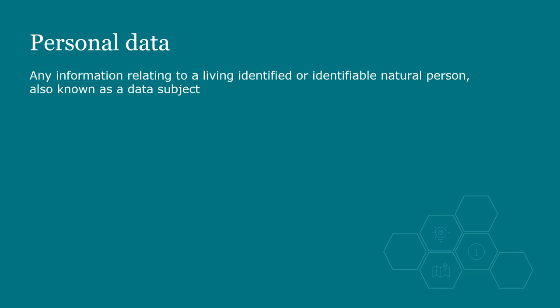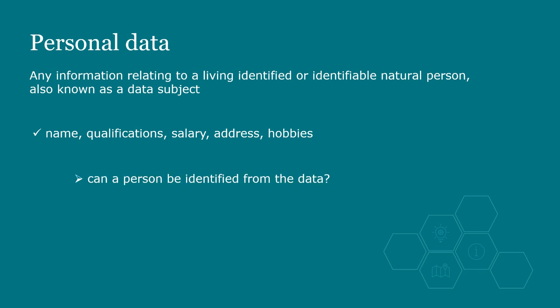Let's start with the data subject and consider their personal data. Personal data is any information relating to an identified or identifiable living person, also known as the data subject. Note, a deceased person is not a data subject, and data relating to them therefore does not fall under the data protection legislation. In many cases, it is clear that data such as your name, qualifications, salary, address and hobbies is about you. So the key questions are: can a person be identified from the data, and does the data relate to an identifiable person?